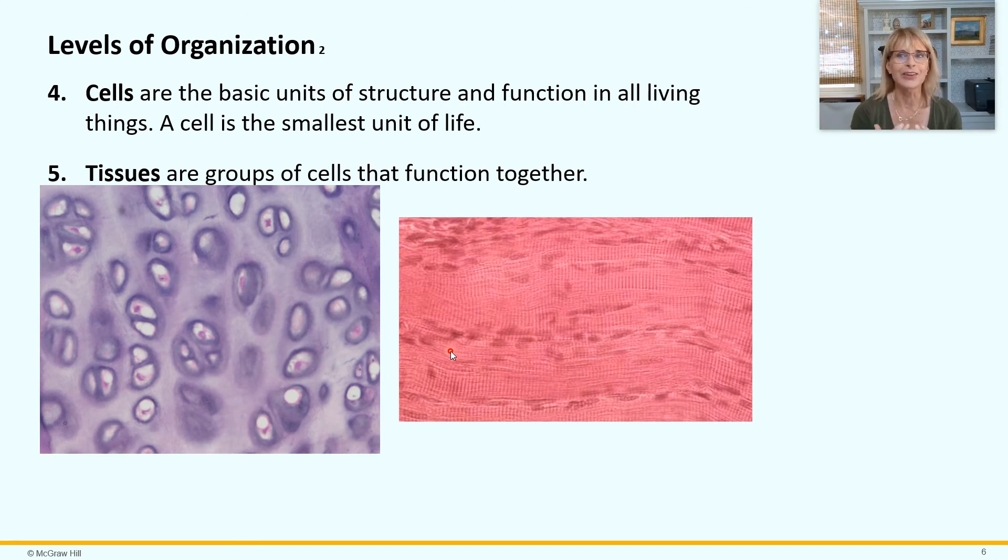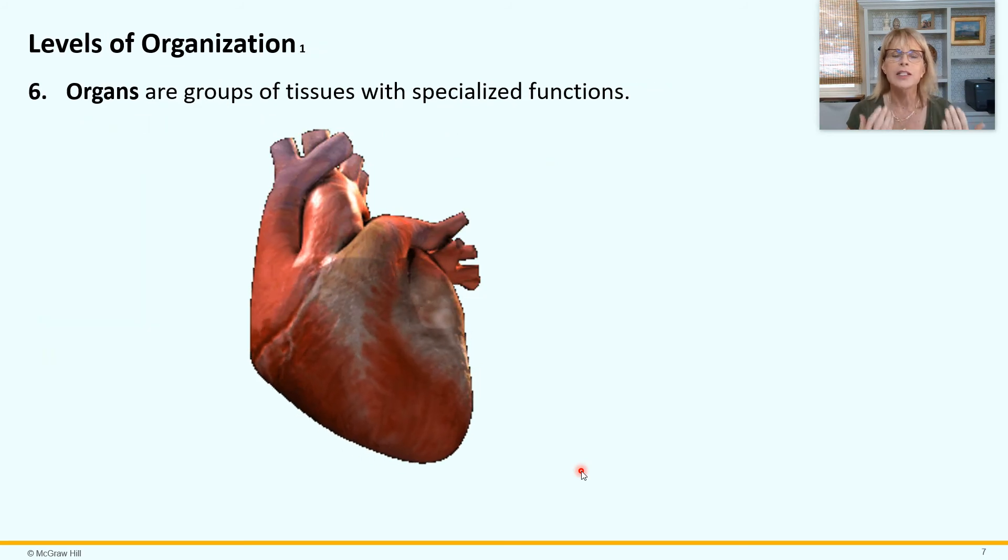Now if we take cells and we put them together, we can organize them, and now we're talking about anatomy, into tissues. Tissues are groups of cells that function together. And we've got a couple of examples here. We will have an entire lecture about tissues. This tissue is hyaline cartilage, you know, the cartilage that's in your knee? That is what it looks like through a microscope. And cartilage is an example of a tissue. This is skeletal muscle through the microscope, this image on the right. And skeletal muscle is another example of a tissue. So atoms get put together into molecules, molecules into macromolecules, macromolecules make up cells, cells get put together into tissues.